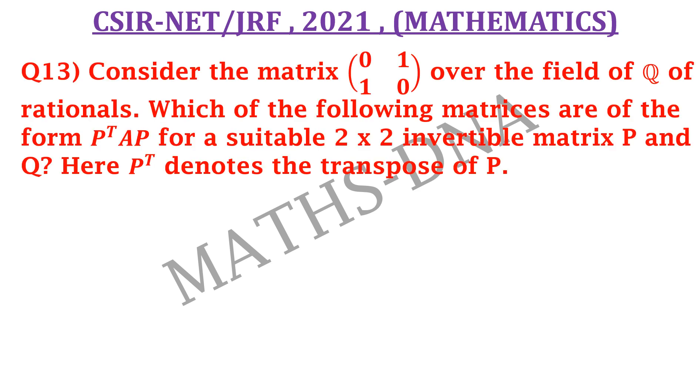Now moving on to the question. The question is, consider the matrix that is a 2 x 2 matrix 0 1 1 0 over the field of rational numbers. Then which of the following matrices are of the form P transpose AP for a suitable 2 x 2 invertible matrix P and Q. Here P transpose denotes the transpose of P.